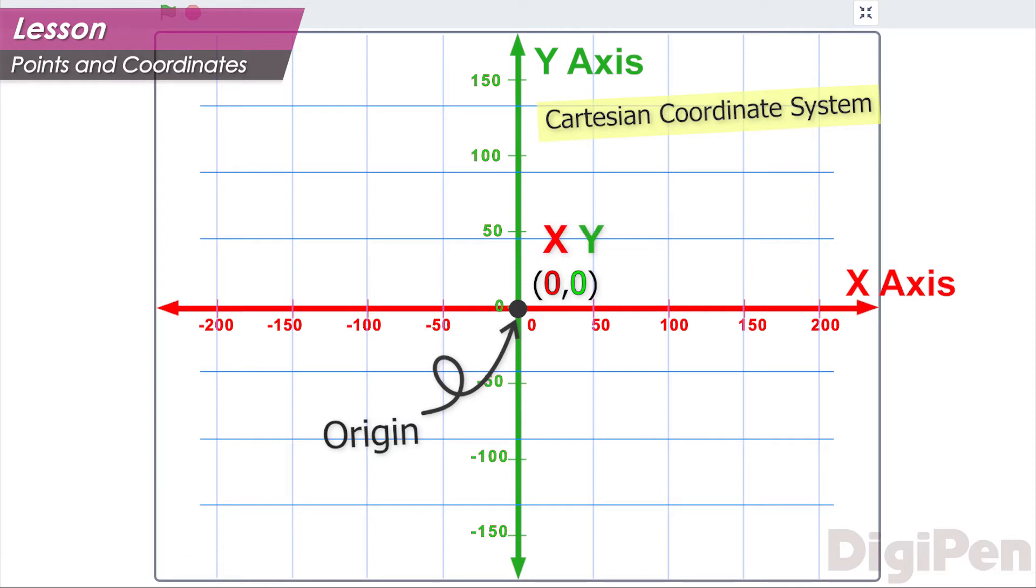Where the first zero represents the value of the x-coordinate, and the second zero represents the value of the y-coordinate. This method of defining a location is used for any point on the grid.